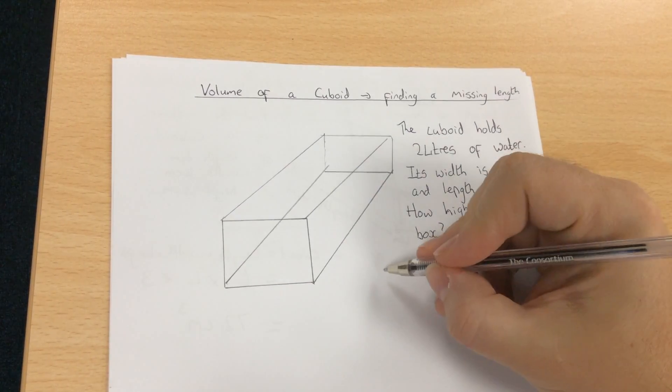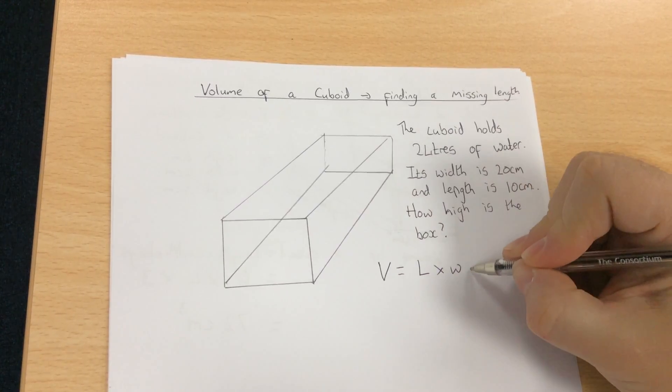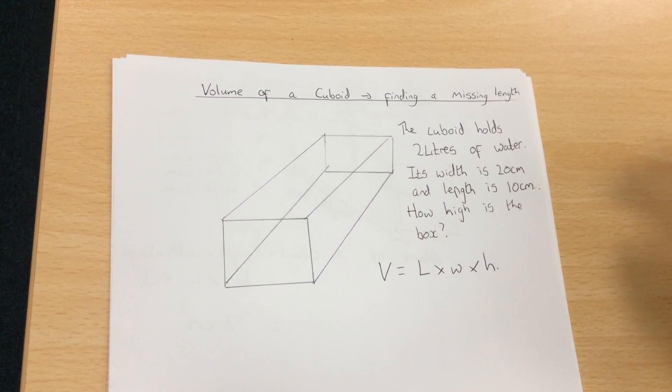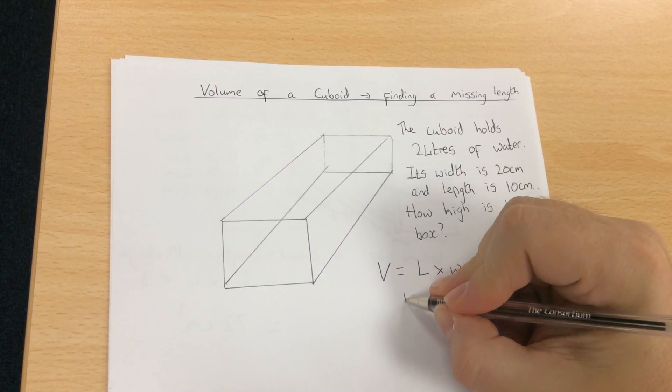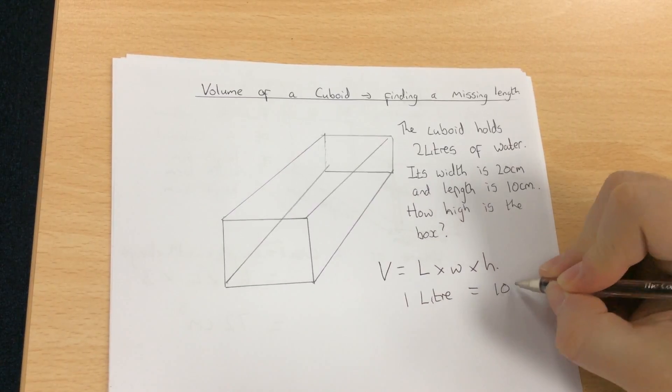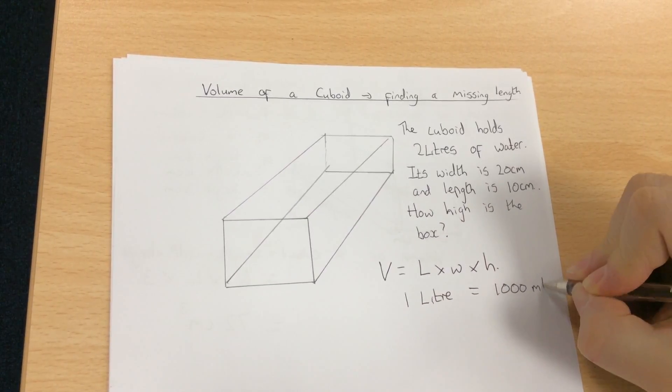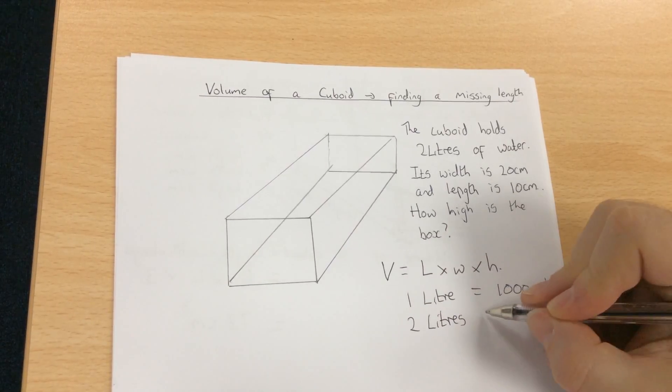Previously we learned that the volume of a cuboid is length times width times height. The cuboid holds two liters. It's important you know that one liter is the same as 1000 milliliters, so two liters would be two lots of 1000, which is 2000 milliliters or 2000 centimeters cubed.